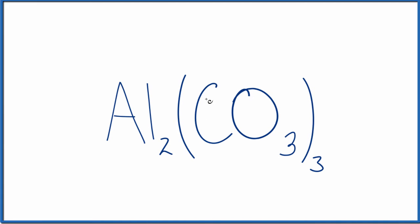Okay, so if you're asked to figure out how many ions are in a formula unit here of Al2(CO3)3, this is aluminum carbonate. Here's how you can figure that out.